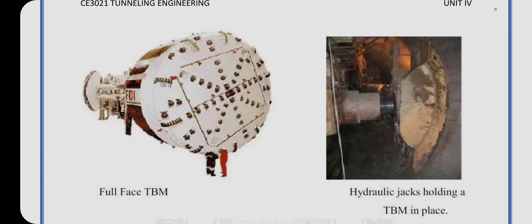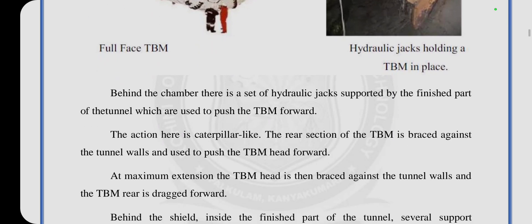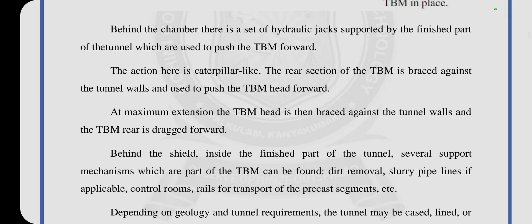This is the full-face TBM, with hydraulic jacks holding it in place. Behind the chamber, there is a set of hydraulic jacks supported by the inserted part of the tunnel lining, which are used to push the TBM forward. The cutting head is pressed against the tunnel face, and the TBM rear is dragged forward. Behind the shield, inside the finished part of the tunnel, several mechanisms which are parts of the TBM can be found.